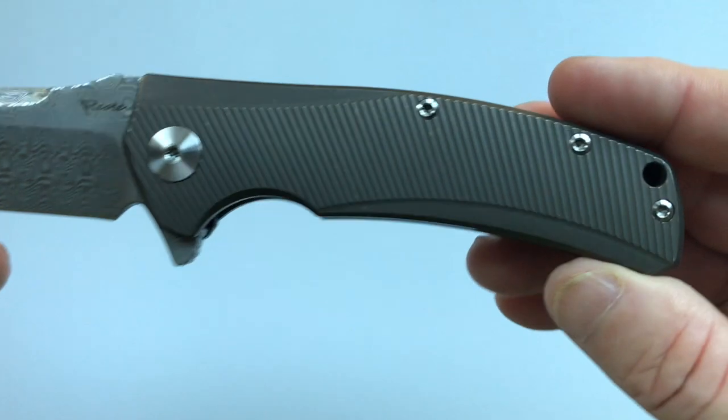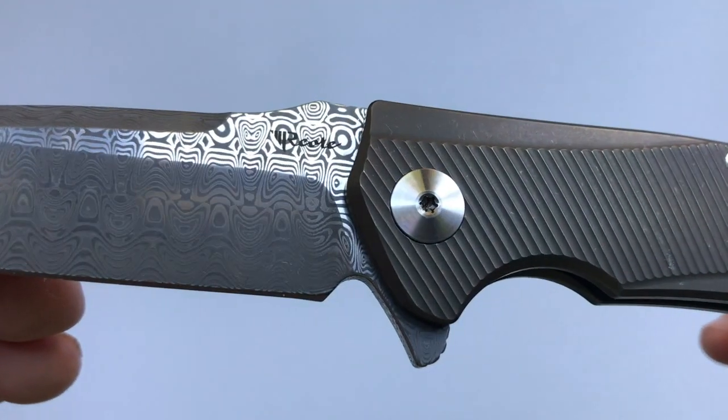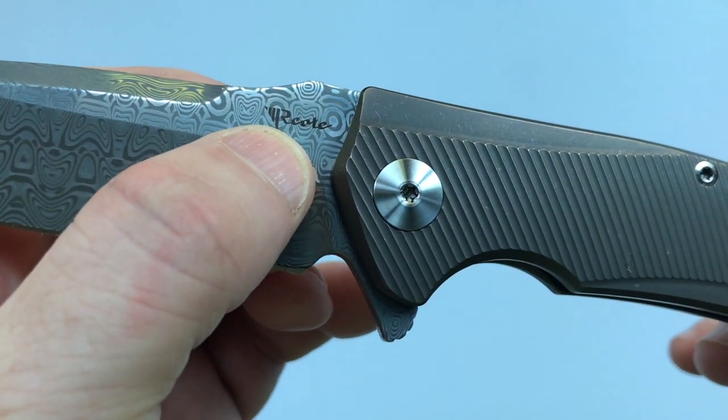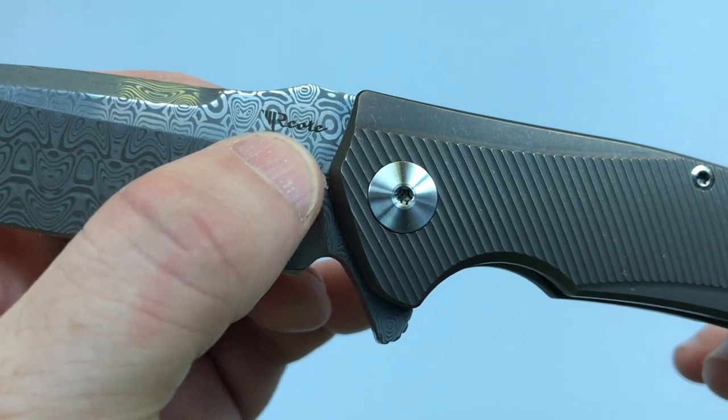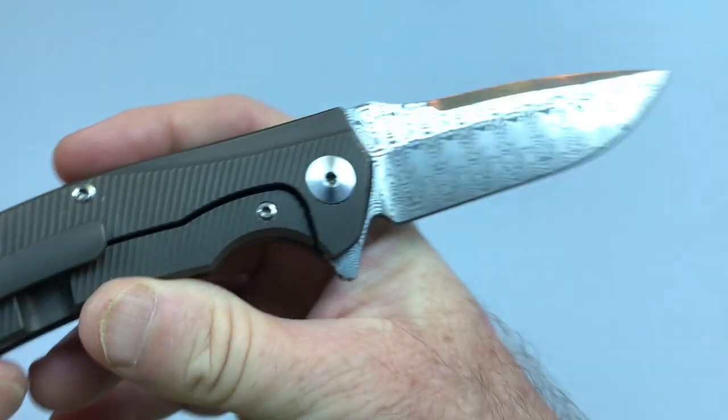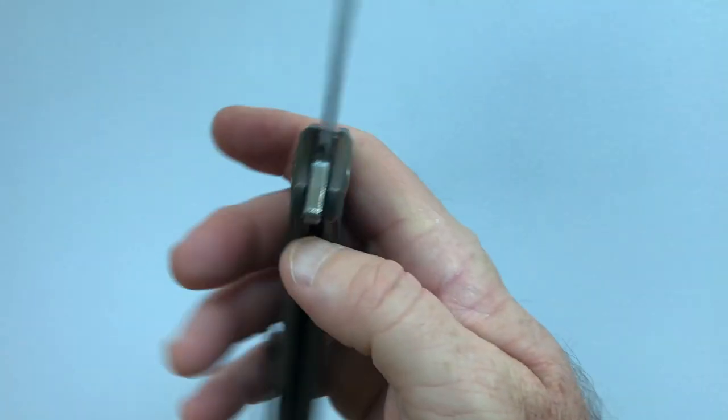The signage on the knife is minimal. The handle is sterile. On the show side up here, you can't tell because of the damasteel pattern, but it says Riat and that is the only marking on the knife.